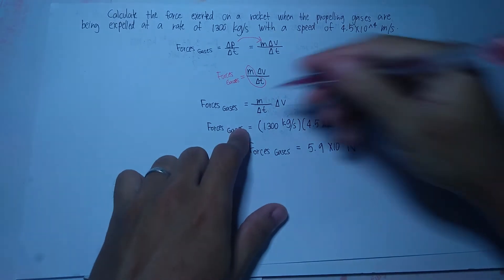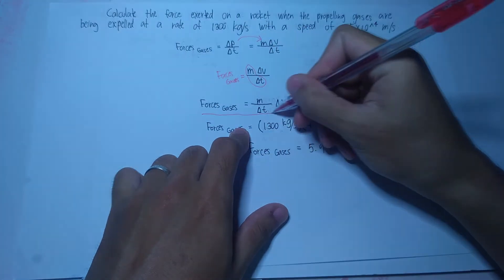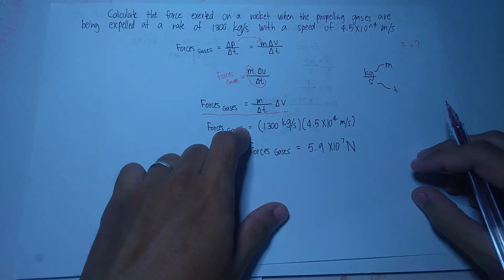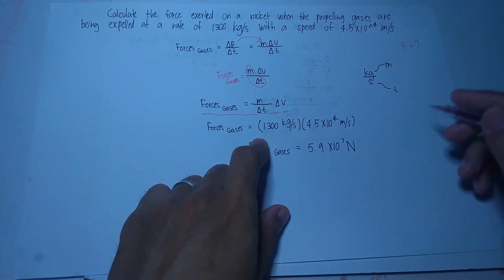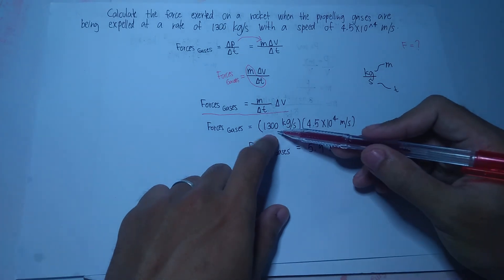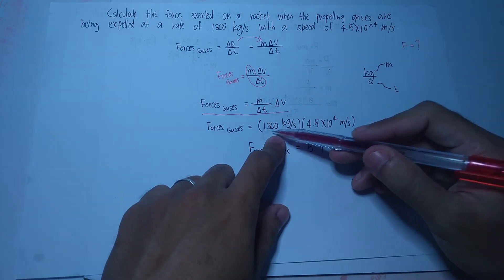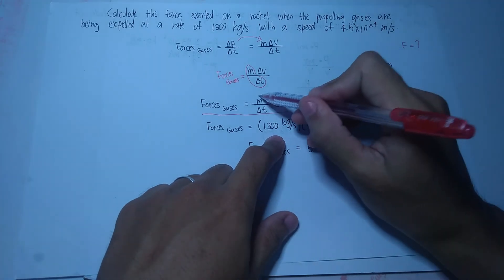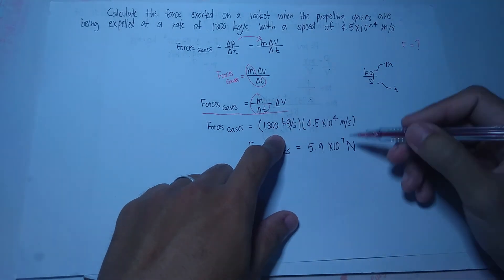So ito nga yung i-implement nating formula, yan yung na-derive natin. We will just simply substitute the values. Substitute lang natin yung rate na 1,300 kg per second sa place nitong mass over change in time.